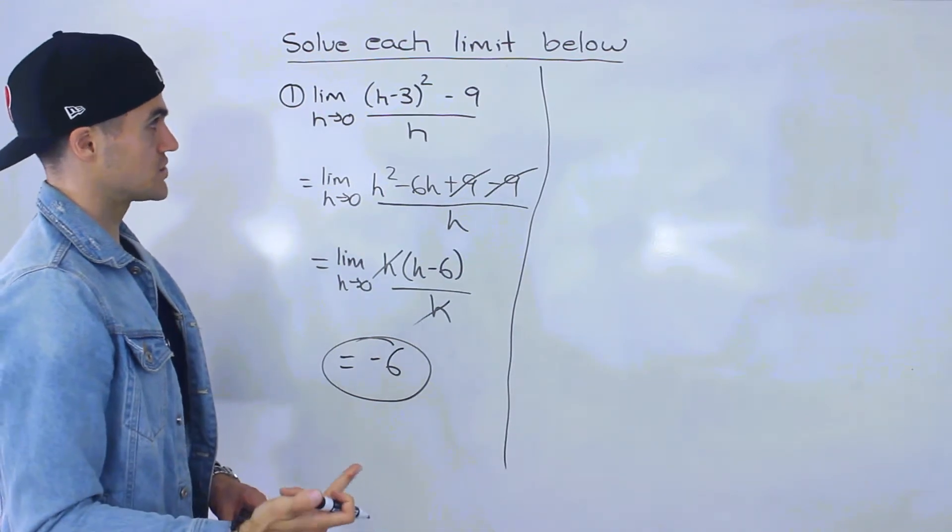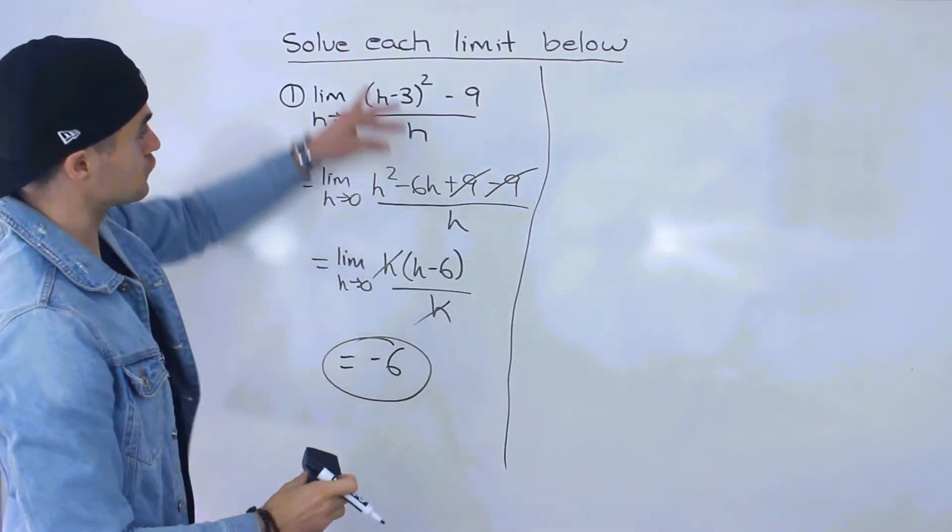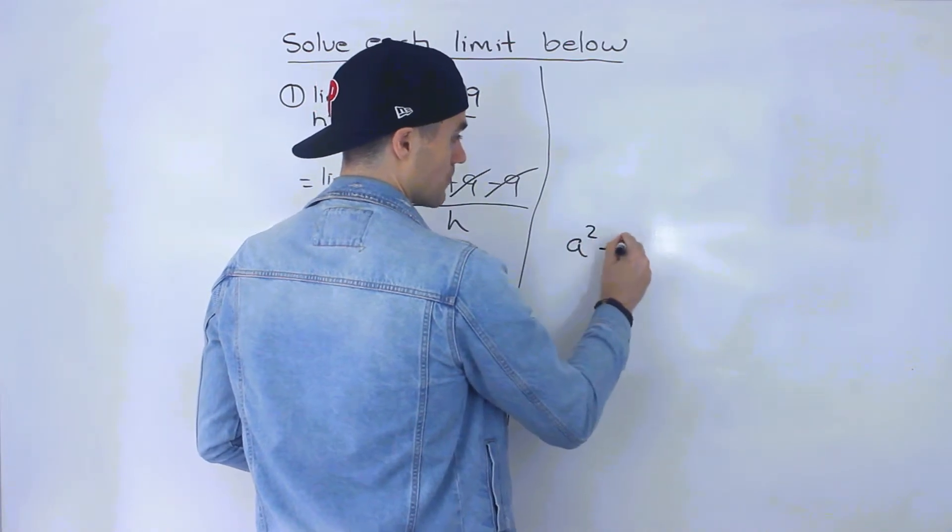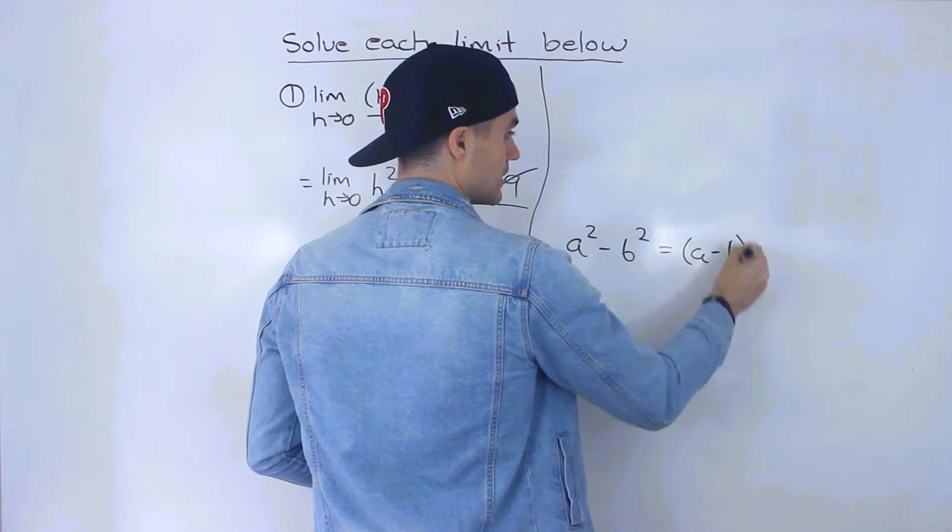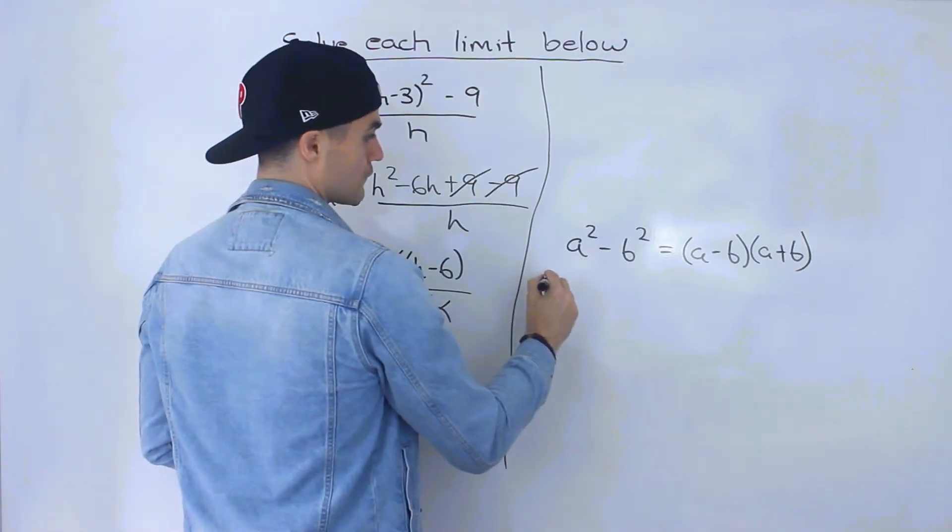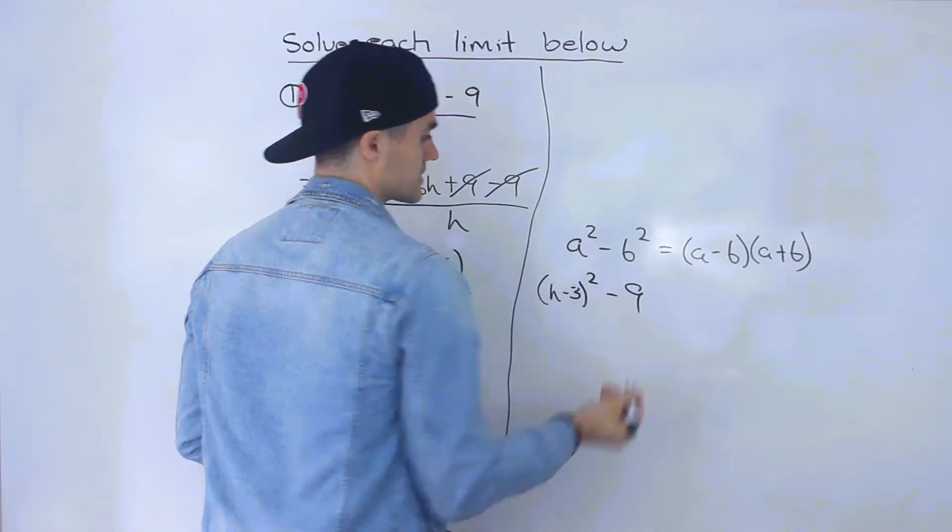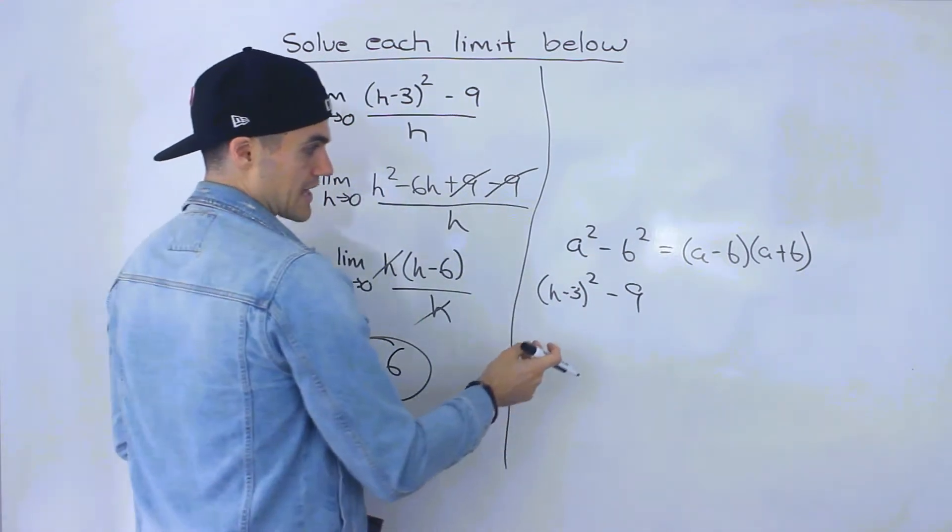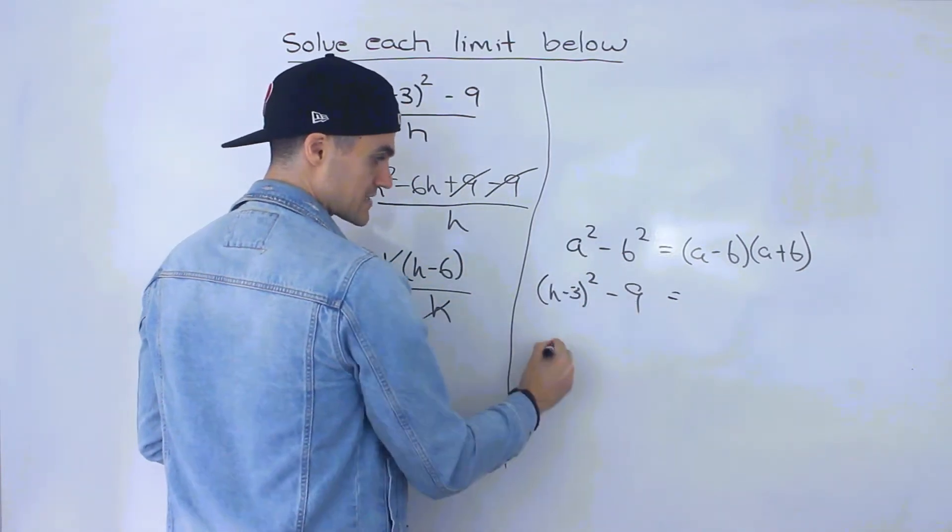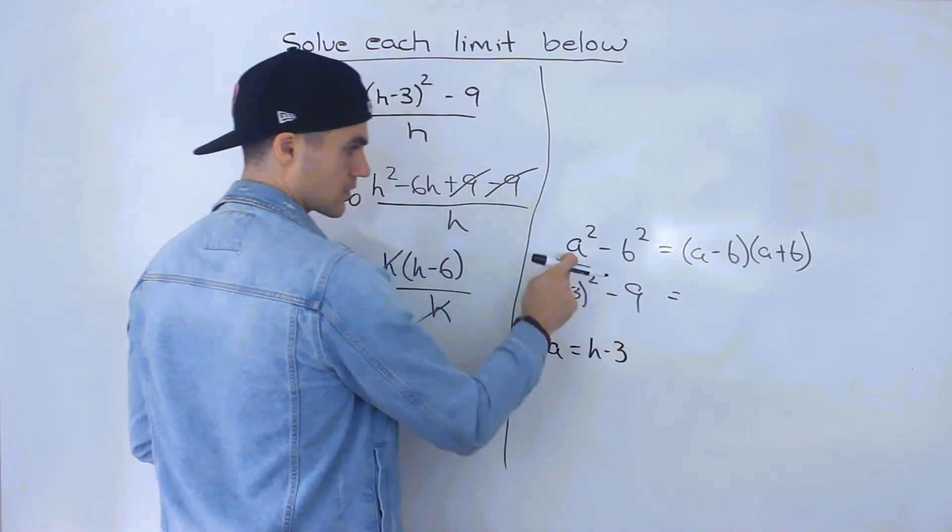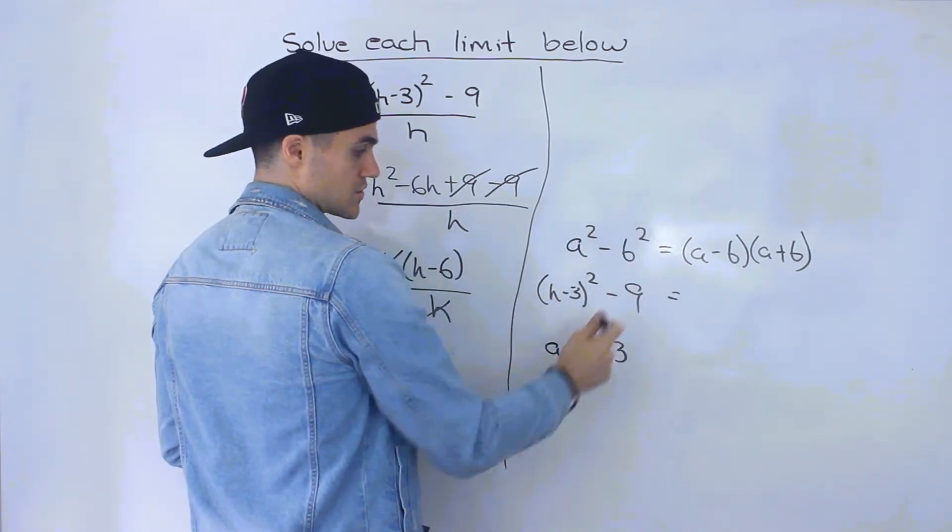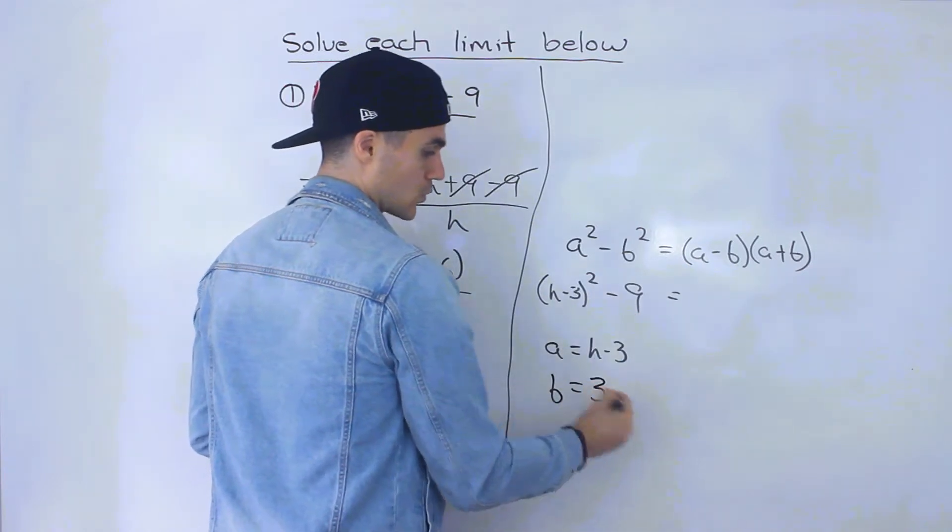Method number two which is actually my preferred method is to realize that this is a difference of squares. So if you remember a difference of squares if we have like a squared minus b squared that's equal to a minus b times a plus b in general. Well notice that we have h minus 3 to the power 2 minus 9. So notice that if we relate this to that this h minus 3 that's equal to a right this a is like this h minus 3 a squared h minus 3 squared and then we have b squared so the b value in this case would be the square root of 9 which is 3.